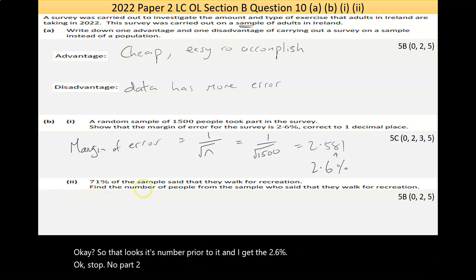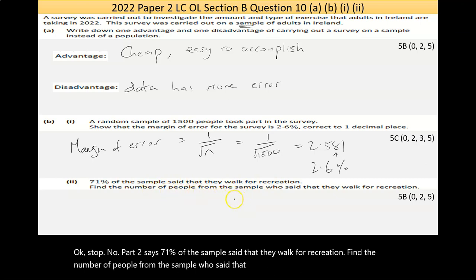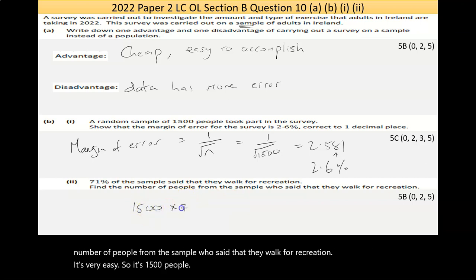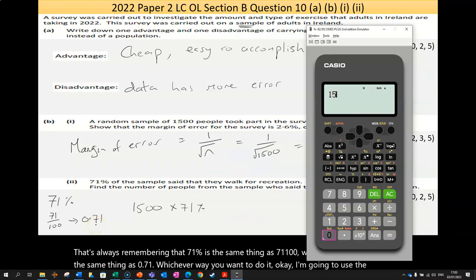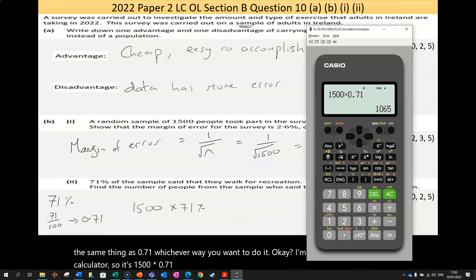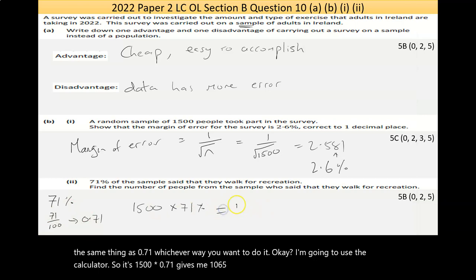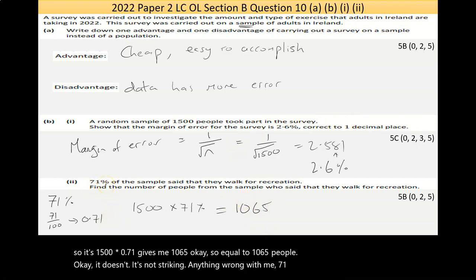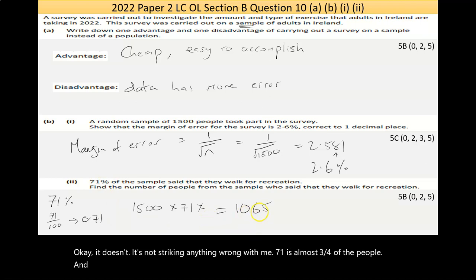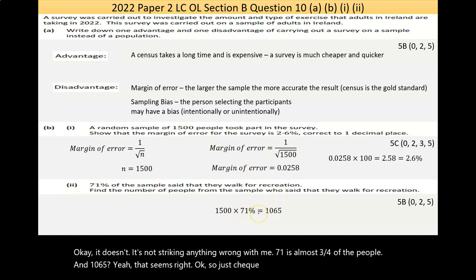Part two says 71% of the sample said that they walk for recreation. Find the number of people from the sample who said that they walk for recreation. This is very easy. So, it's 1,500 people. I want to get 71% of that. It's always worth remembering that 71% is the same thing as 71 over 100, which in decimal form is 0.71. So, it's 1,500 multiplied by 0.71 gives me 1,065 people.